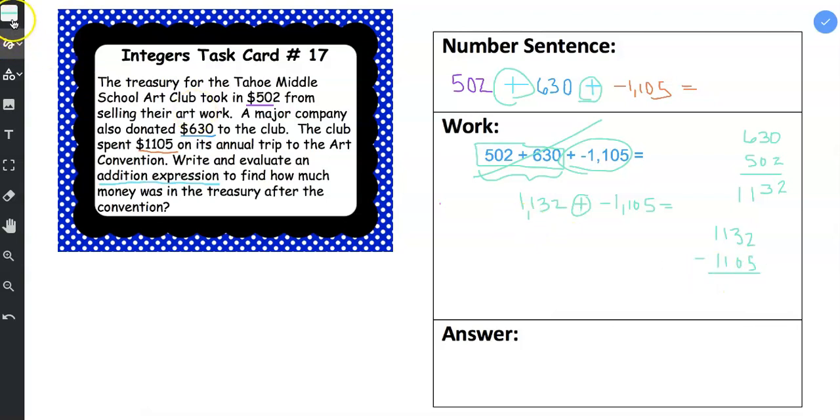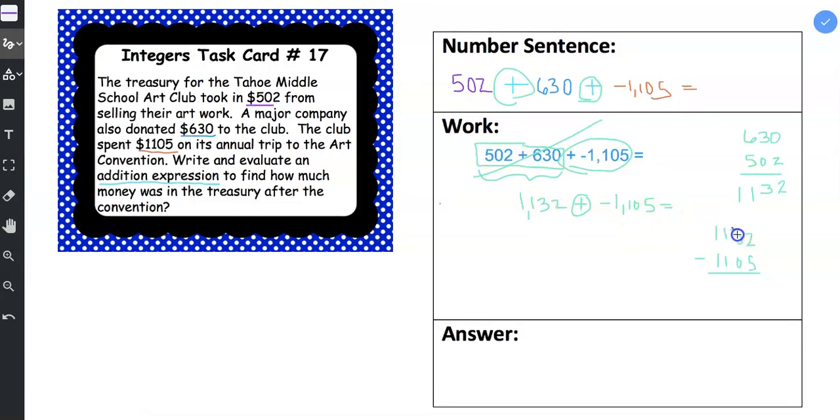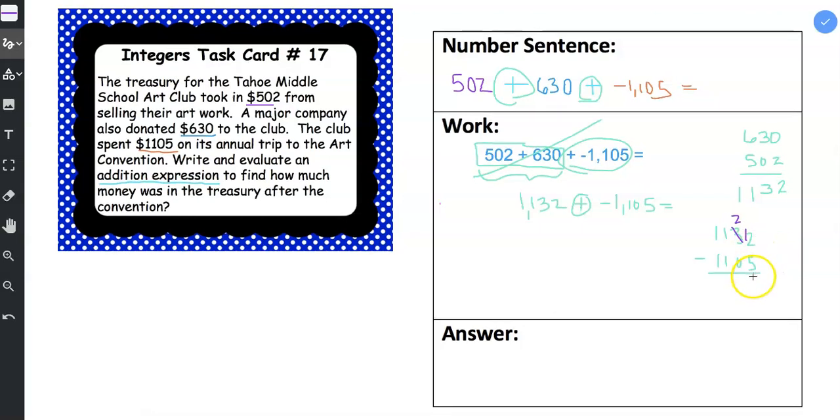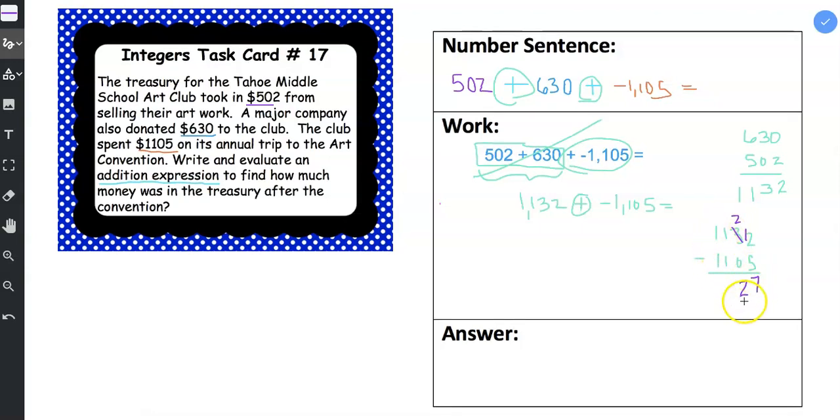And I'm going to need to borrow, so I'm going to get a different color out. So I'm going to make the 3 a 2, and then I can add 10 to the 2 making it 12. 12 minus 5 is 7, 2 minus 0 is 2, and then 1 minus 1 is 0, and 1 minus 1 is 0. So the difference is $27.